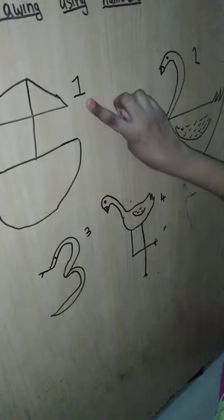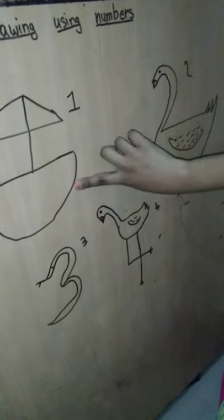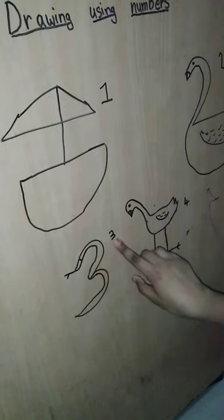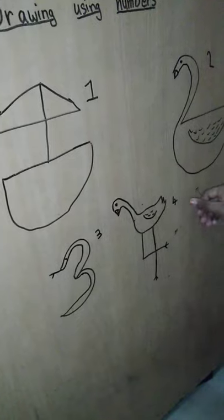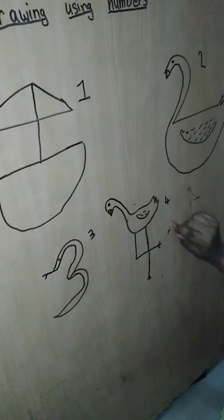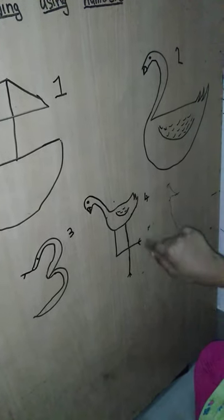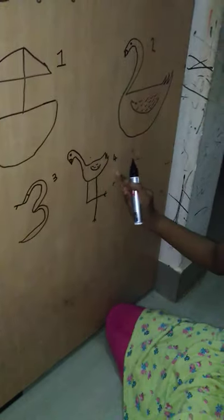So what we drew: using the number one — a boat; using the number two — a swan; using the number three — a snake; using the number four — a flamingo. We drew four drawings using numbers!